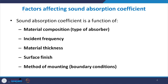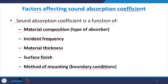To quickly glance through the factors affecting the sound absorption coefficient, which we discussed in our last class: the sound absorption coefficient is a function of the type of material or its composition, the incident frequency, the material thickness, the surface finish, and the method of mounting or the boundary conditions available. We will discuss these factors one by one on how they affect the alpha value of a porous sound absorber.